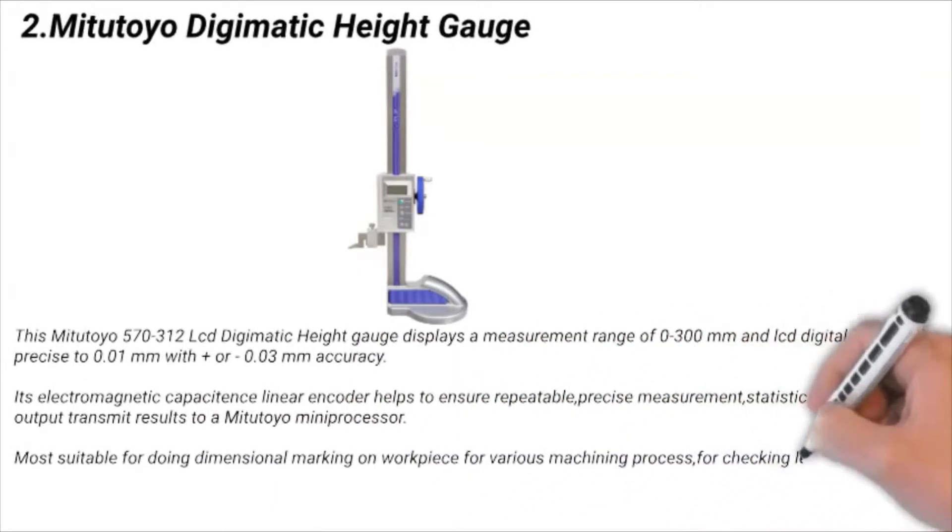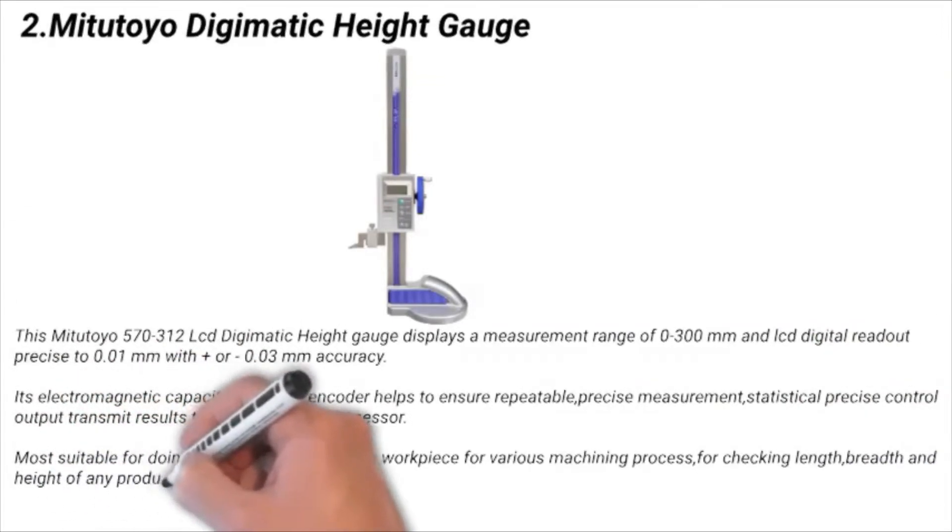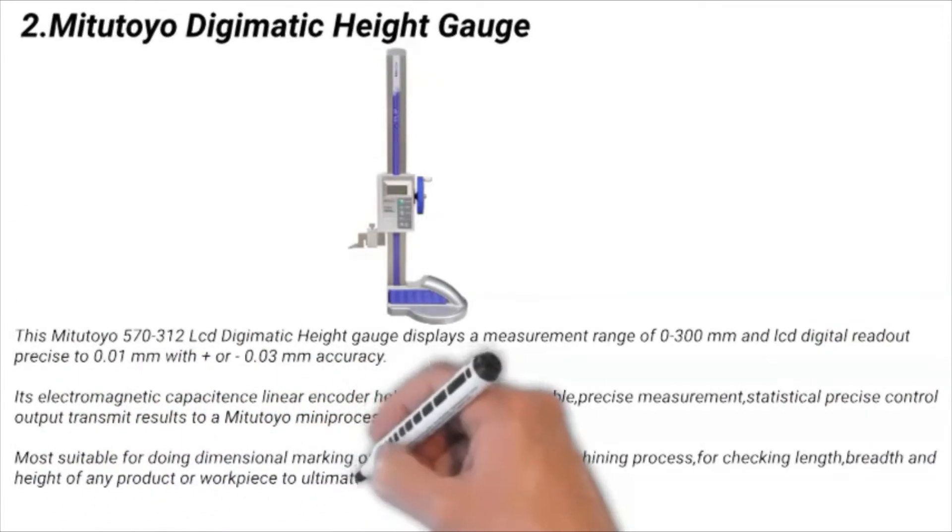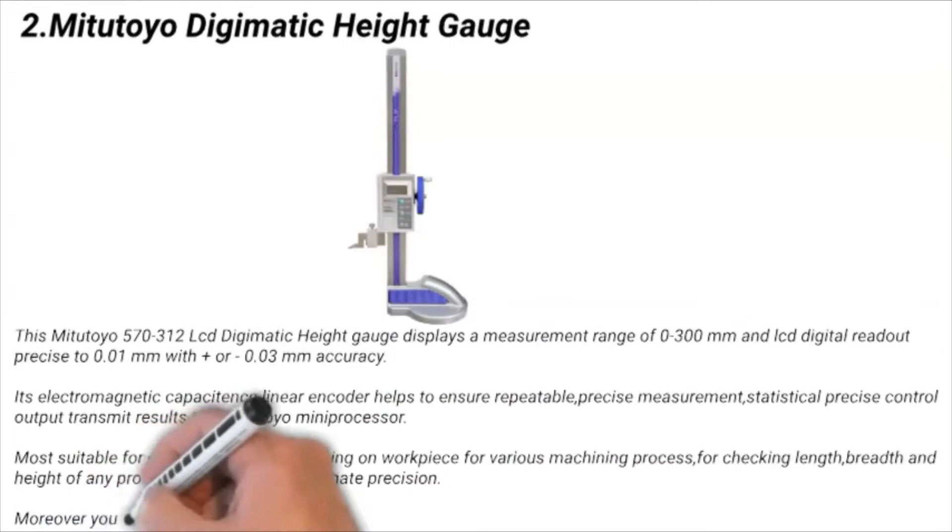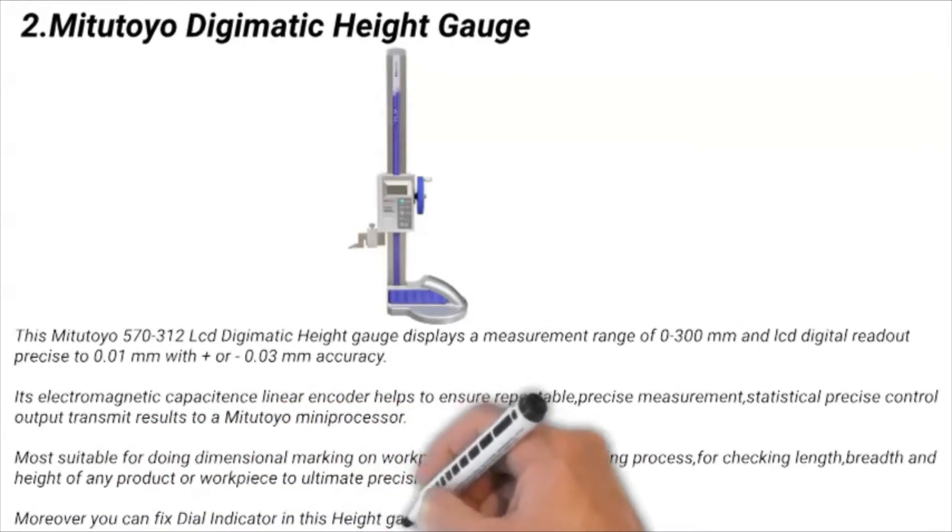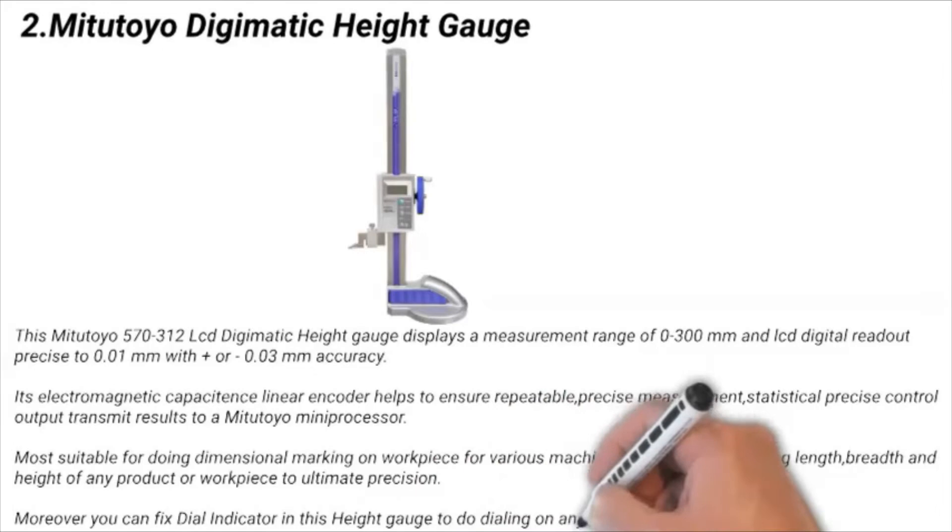For checking length, breadth, and height of any product or workpiece to ultimate precision. Moreover, you can fix dial indicator in this height gauge to do dialing on any workpiece.